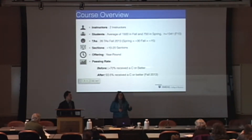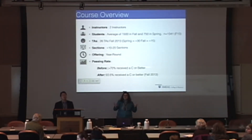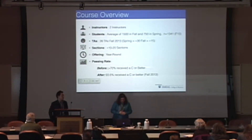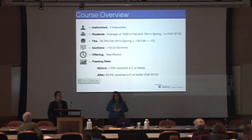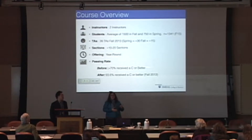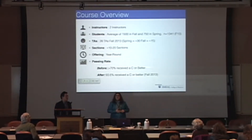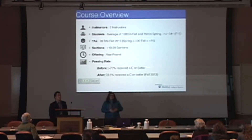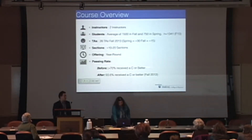Before they flipped the course, students had an average score where 70% received a C or better. That's before the flipped design. Last fall, 93.6% of students received a C or better. The instructor likes to talk about how the proof is in the pudding.